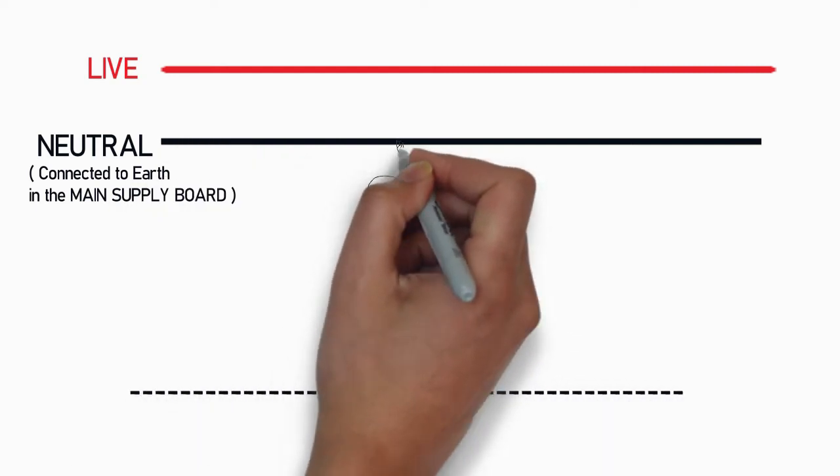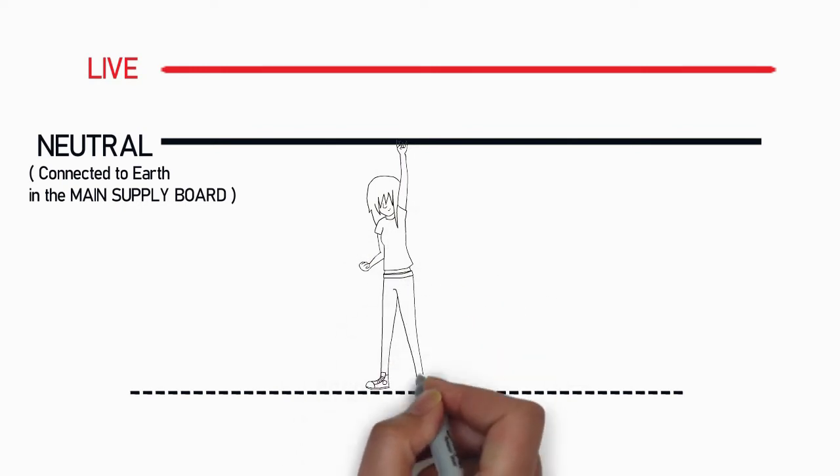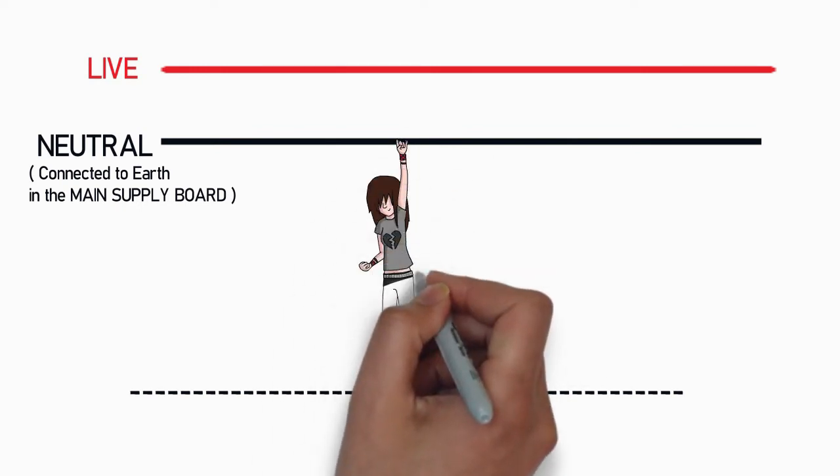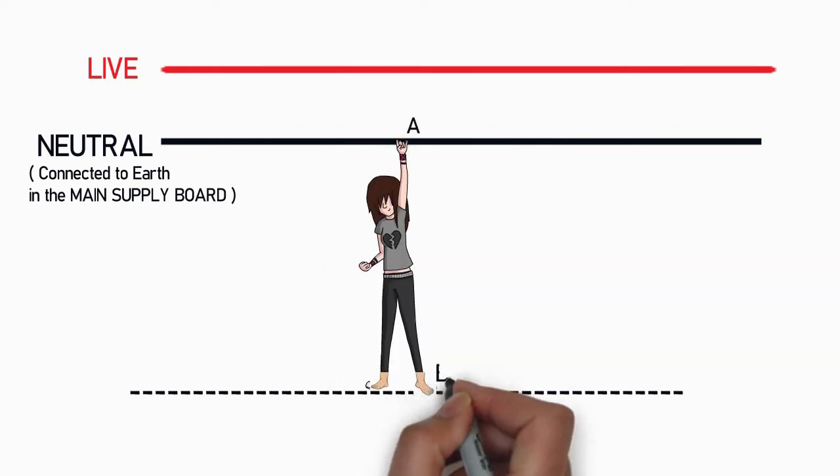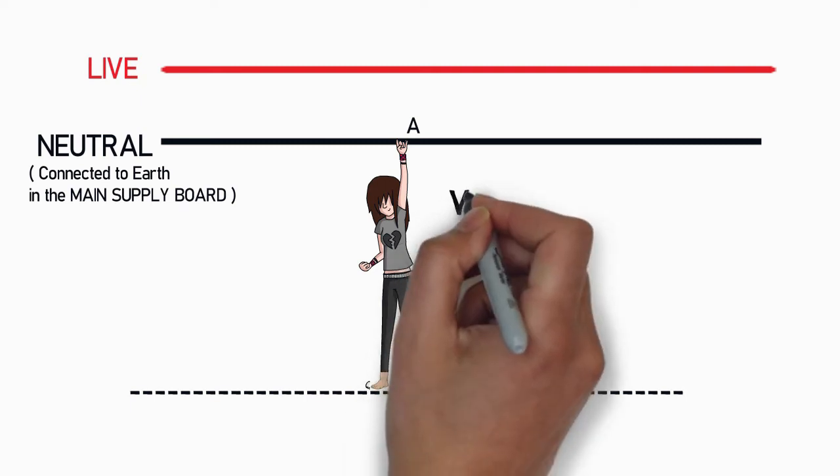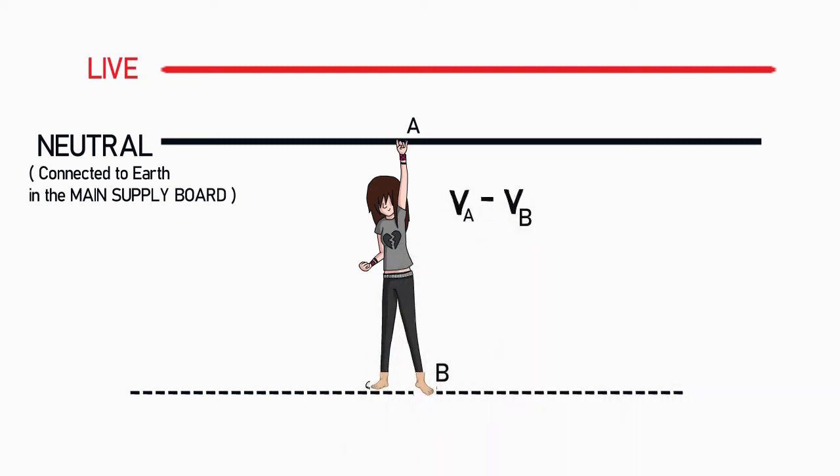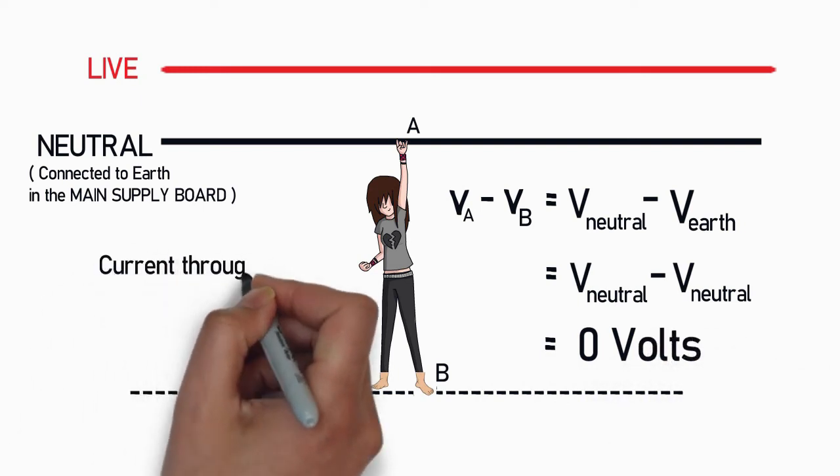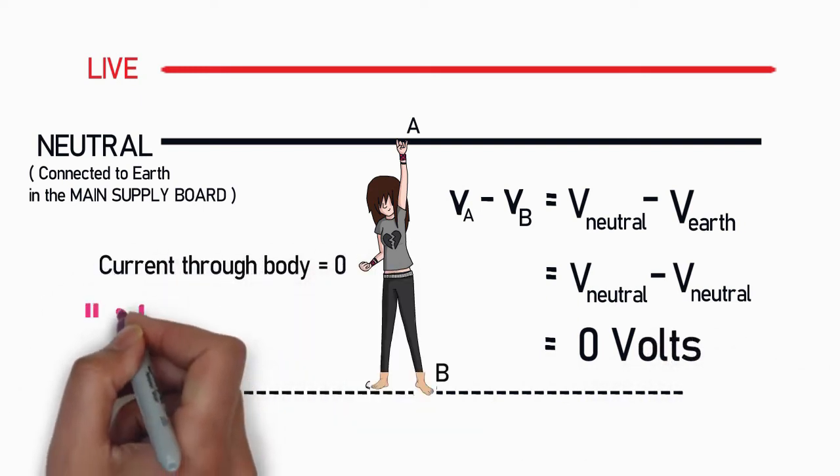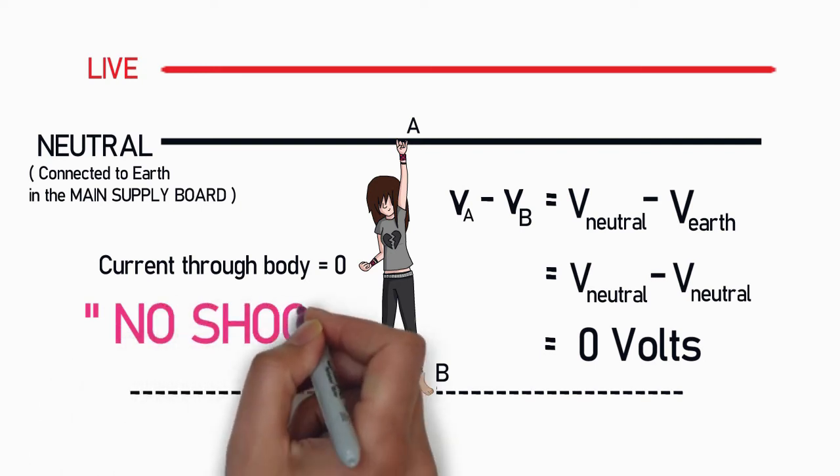Now consider a person getting hold of the neutral wire. Let us see what happens now. Consider the contact points to be A and B. Calculating the potential difference between A and B gives us a final value of zero volt because as I have told you earlier the neutral connection of a home is directly connected to earth inside the main supply. Since the potential difference is zero current will not flow through the body which gives a person no electric shock.